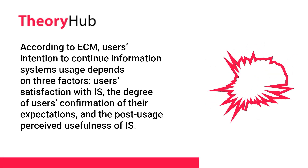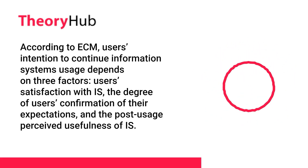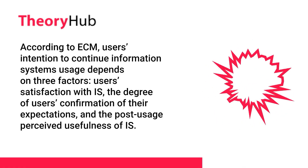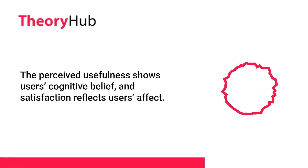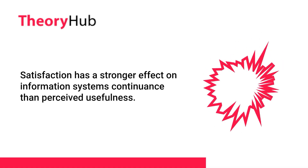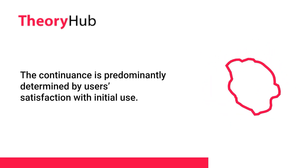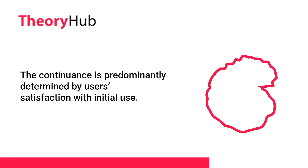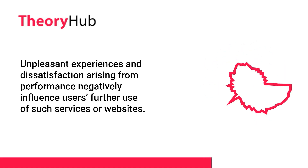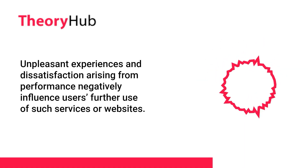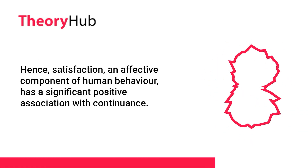According to ECM, users' intention to continue information systems' usage depends on three factors: users' satisfaction with IS, the degree of users' confirmation of their expectations, and the post-usage perceived usefulness of IS. The perceived usefulness reflects users' cognitive belief, and satisfaction reflects users' affect. Satisfaction has a stronger effect on IS continuance than perceived usefulness, and continuance is predominantly determined by users' satisfaction with initial use. Unpleasant experiences and dissatisfaction arising from performance negatively influence users' further use of such services or websites. Hence, satisfaction has a significant positive association with continuance. Initial expectations and confirmation of those expectations after first use are two important antecedents to satisfaction.